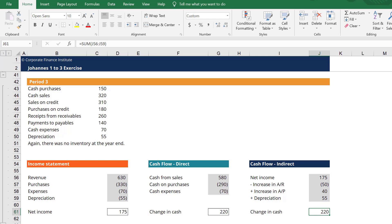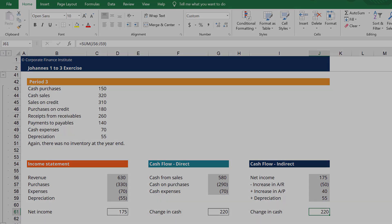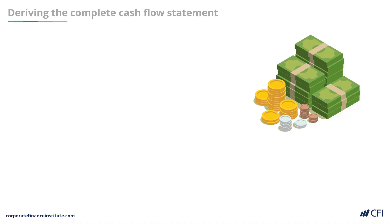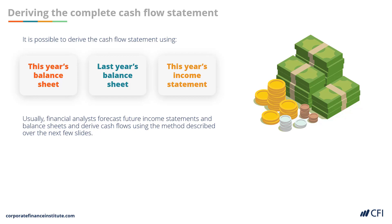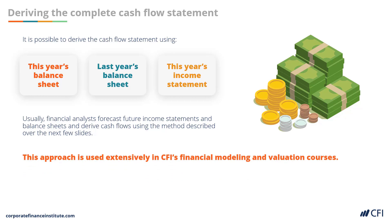Congratulations — you've now built a reasonably complex cash flow statement from scratch. So far we've only focused on the operating cash flow section. Now it's time to build an entire cash flow statement with all three sections, using this year's balance sheet, last year's balance sheet, and this year's income statement. These three documents alone will enable us to build a full cash flow statement — the method financial analysts use when forecasting performance in Excel, and the approach used extensively in financial modeling and valuation courses.